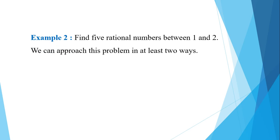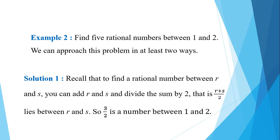Find 5 rational numbers between 1 and 2. We can approach this problem in at least 2 ways. One method: to find a rational number between R and S, add R and S and divide the sum by 2 — that is, R plus S divided by 2 lies between R and S.